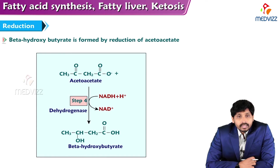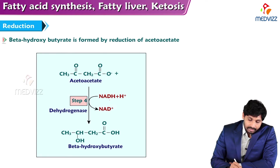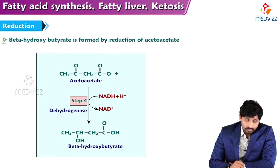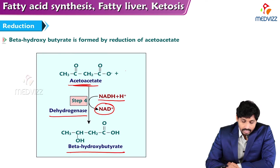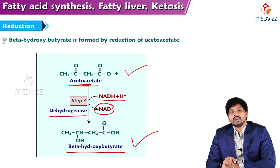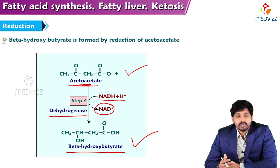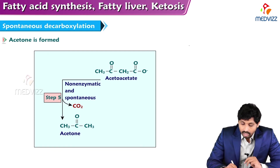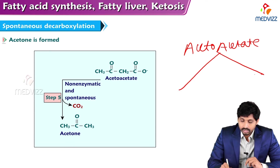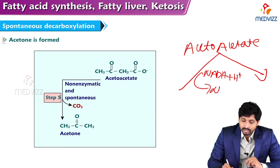From acetoacetate, two reactions can occur. In one reaction, acetoacetate undergoes dehydrogenation — hydrogen is removed and NADH is converted to NAD⁺ — by the enzyme dehydrogenase to form beta-hydroxybutyrate. So from acetoacetate we get beta-hydroxybutyrate.